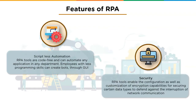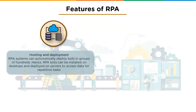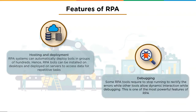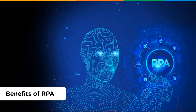Security — RPA tools enable configuration and customization of encryption methods, defending against network interruptions. Hosting and deployment — RPA systems can automatically deploy bots in groups of hundreds, installed on desktops and deployed on servers to access data for repetitive tasks. Debugging — some RPA tools allow dynamic interaction while debugging, enabling developers to resolve issues in a runtime environment without changing the process.